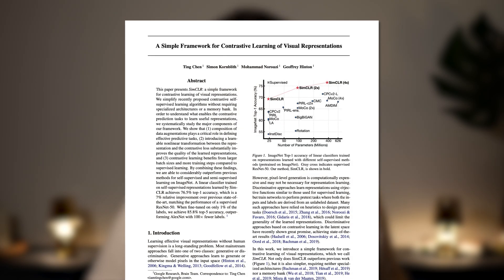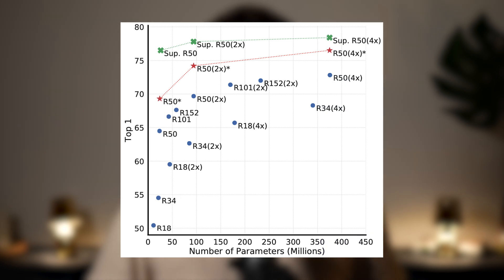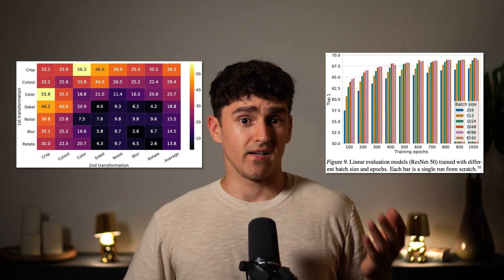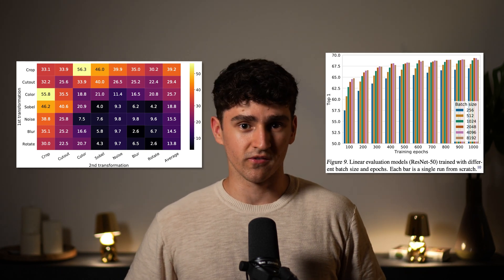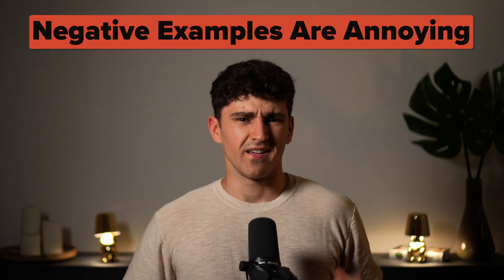SimCLR successfully implemented the idea of contrastive learning and back then achieved the new state-of-the-art performance. Nevertheless, the idea has fundamental weaknesses: its sensitivity to specific augmentations and its need for very large batch sizes to provide a large set of negative examples. In other words, the reliance on those negative samples is annoying.